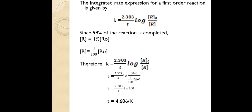When 99% of the reaction is completed, only 1% of the initial concentration is left. So 1% means (1/100) × R₀. Substituting that into the expression, we get: t = (2.303/k) × log(R₀ / ((1/100) × R₀)). The R₀ terms cancel, leaving log(100), which equals 2.